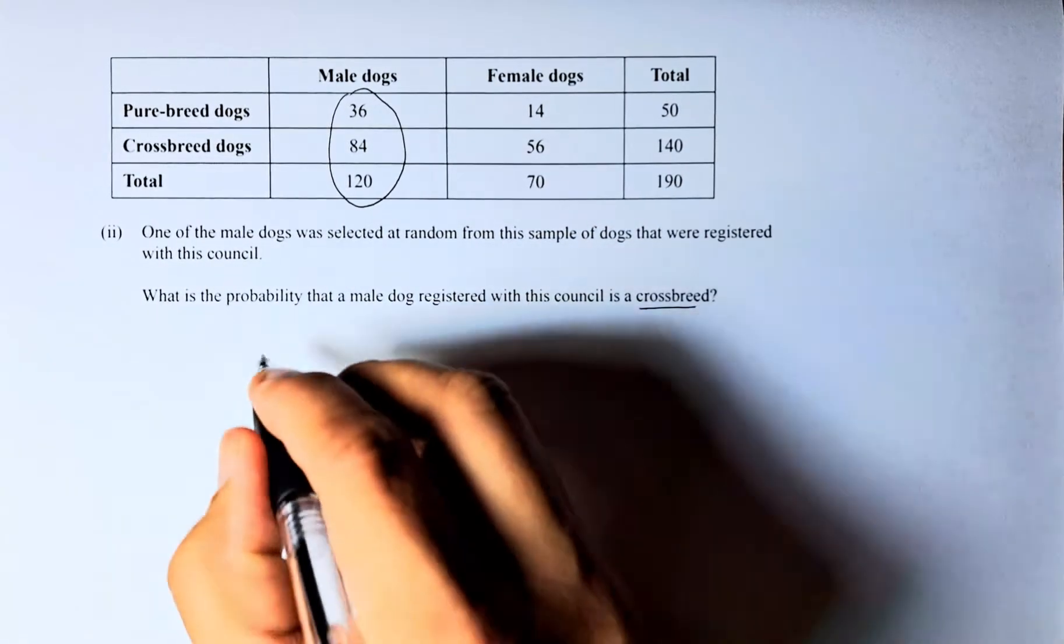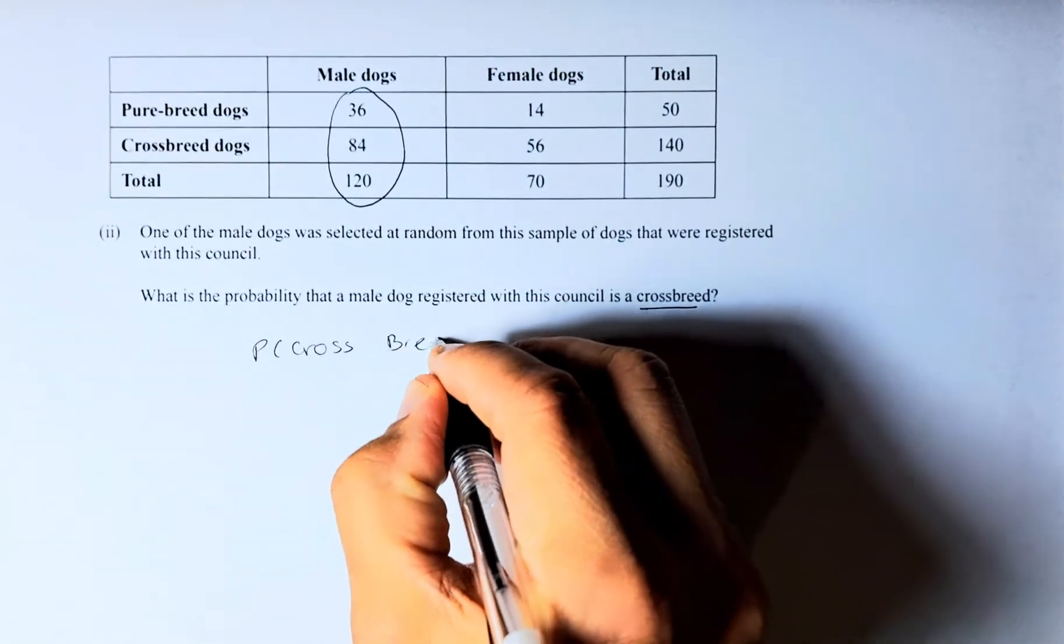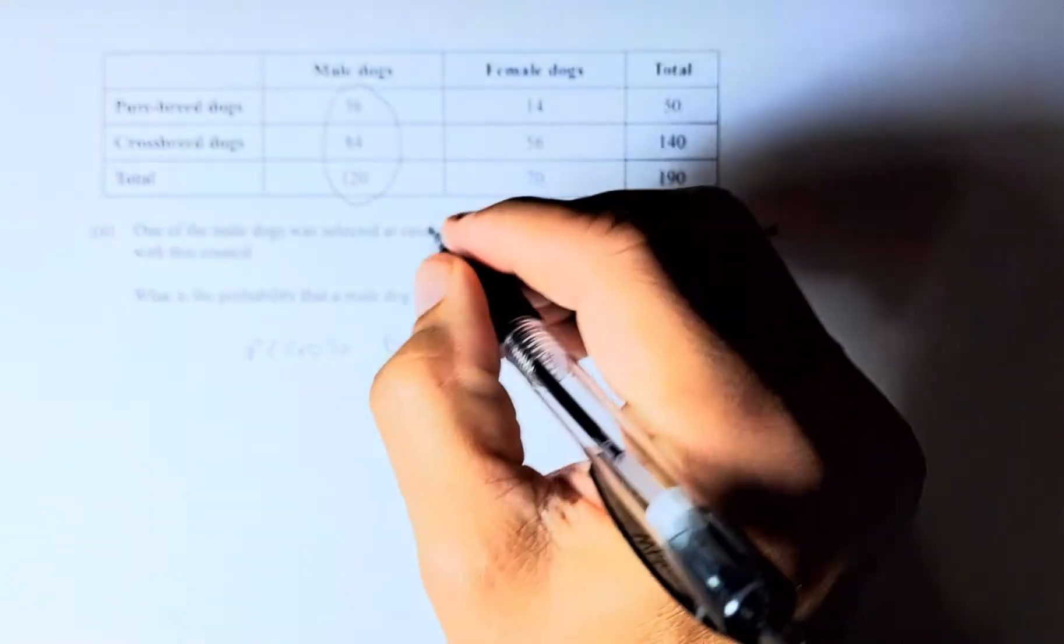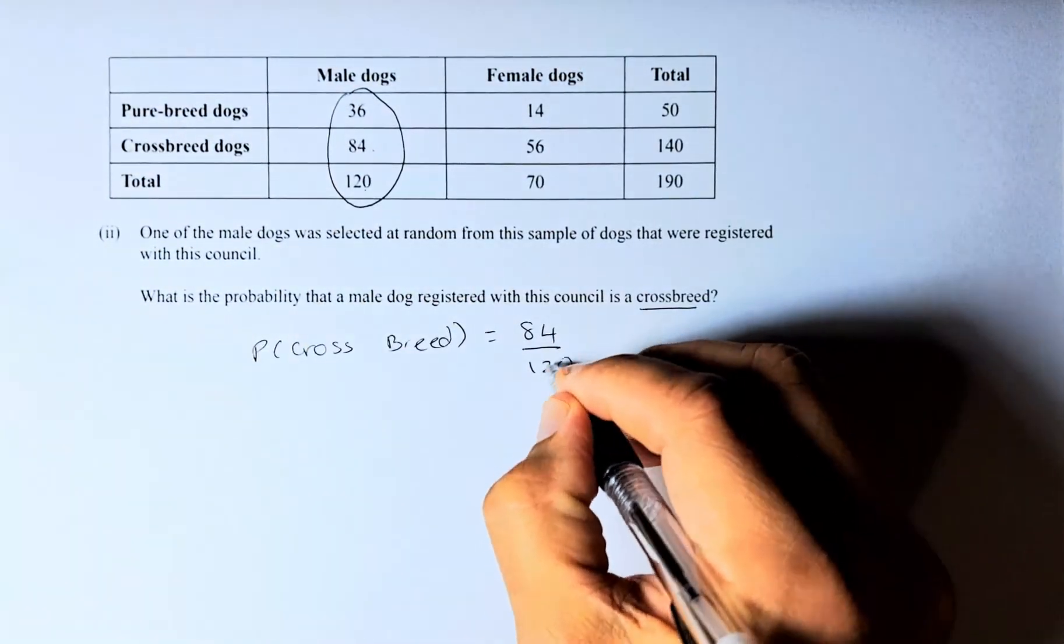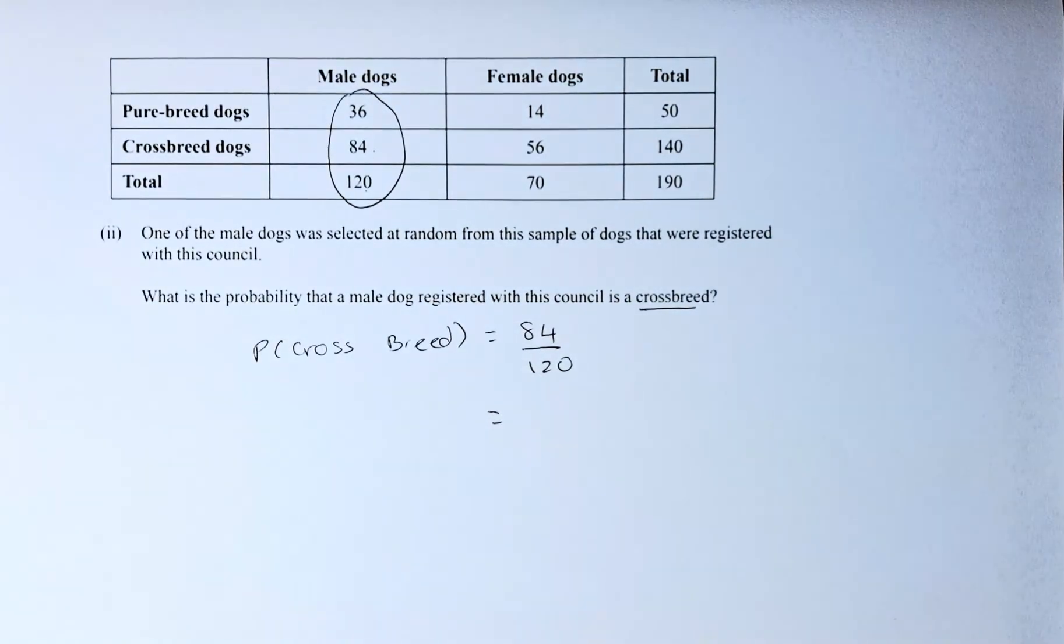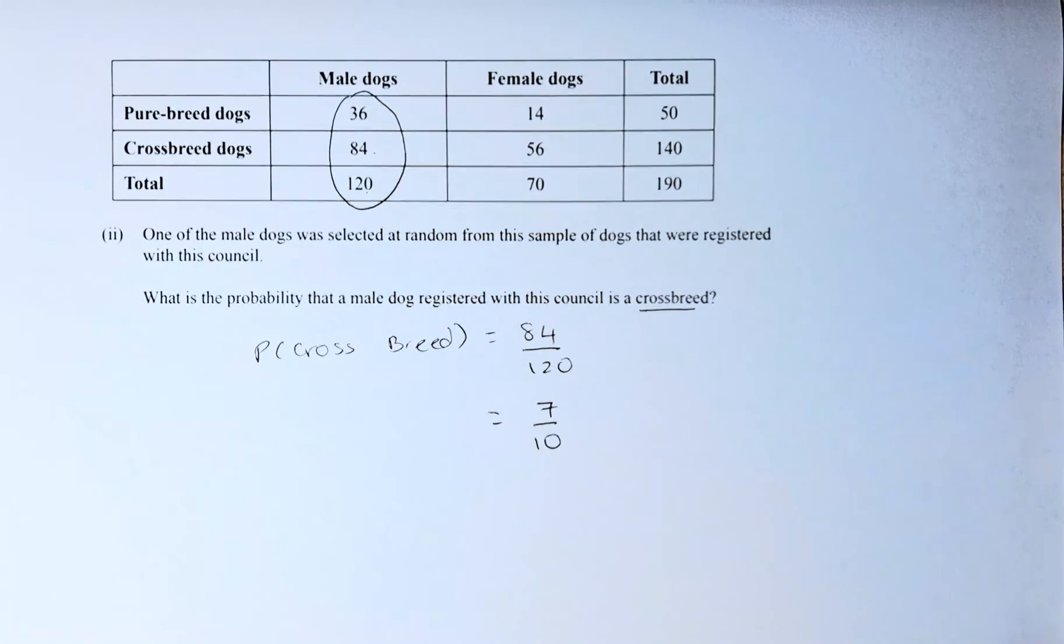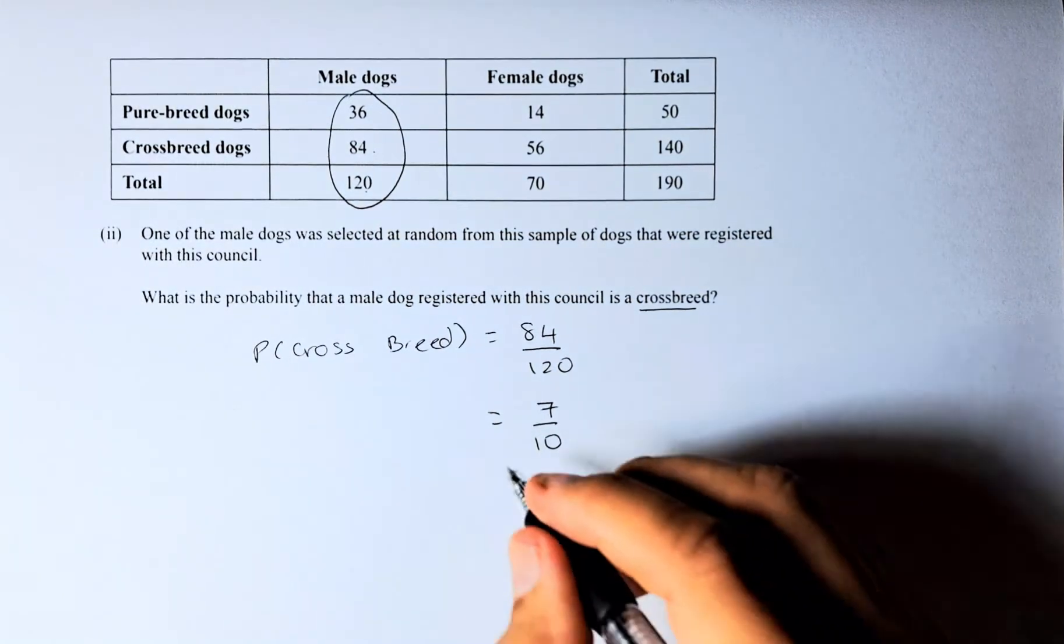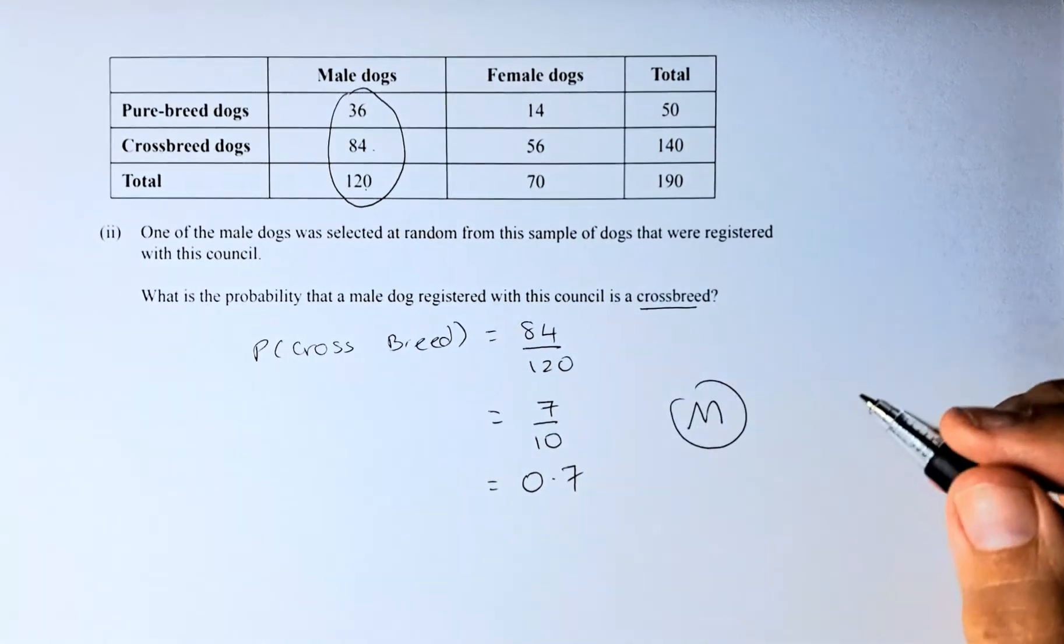What is the probability that the male dog registered with the council is a crossbreed? So we are going to put, it's a probability of crossbreed. Because we are only looking at male, so crossbreed is 84 out of only 120. Simplify them, it will give you 7 over 10. You divide by 12. And then the answer is going to be, if you are a decimal, 0.7. That will give you a merit in this question.